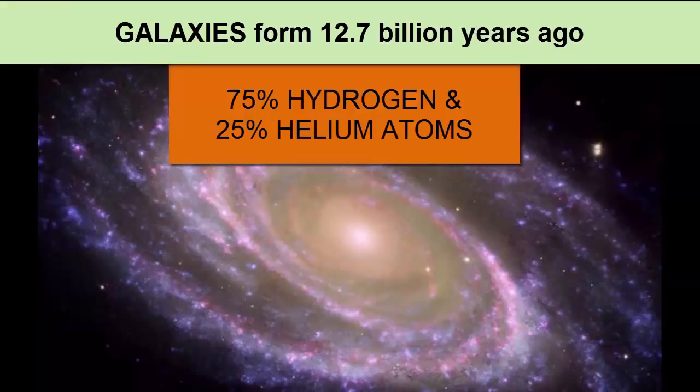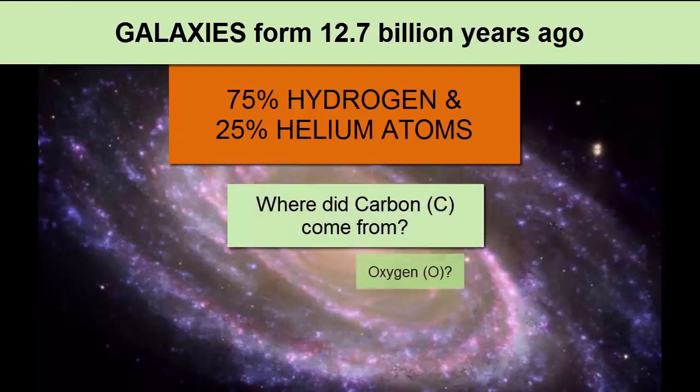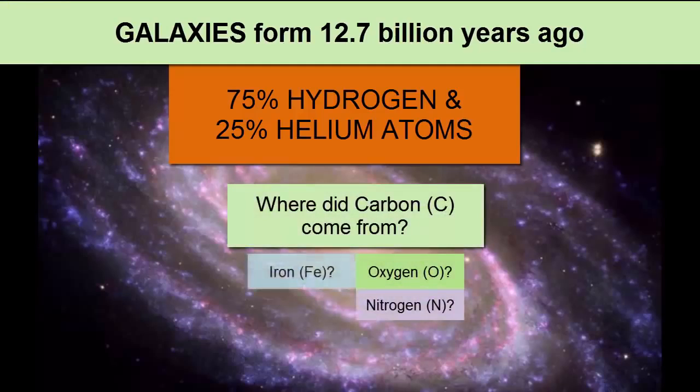So now we have stars, solar systems, and galaxies. What about rocky planets? And what about the atoms other than hydrogen? Where did they come from?